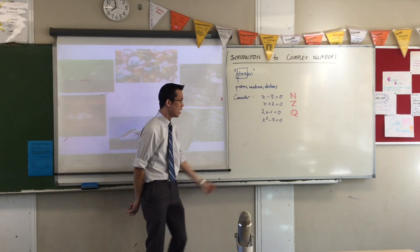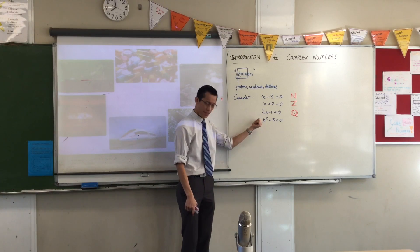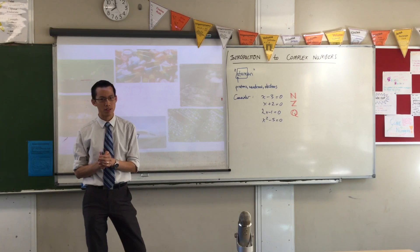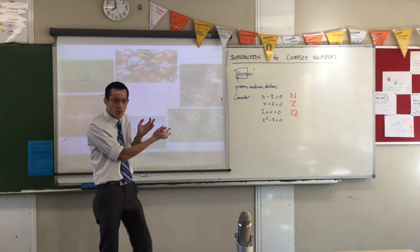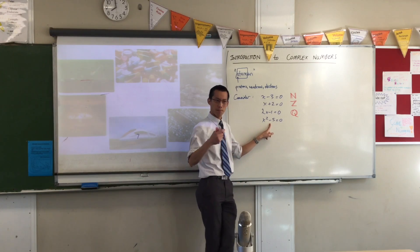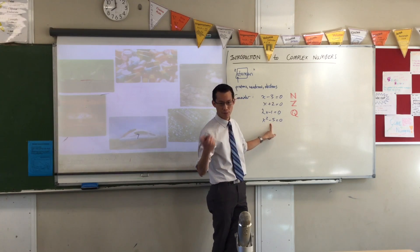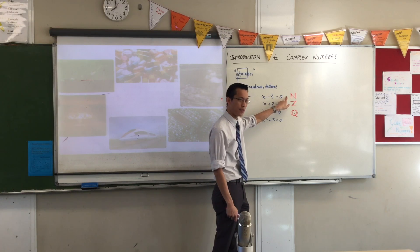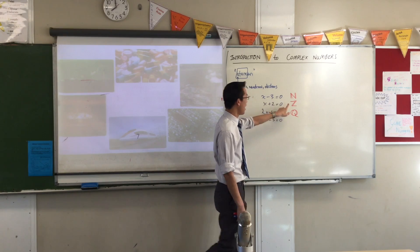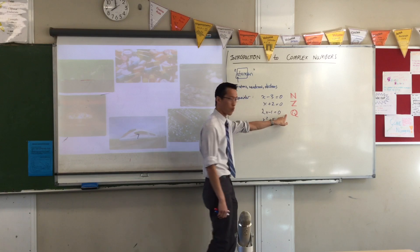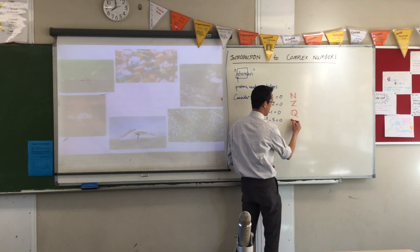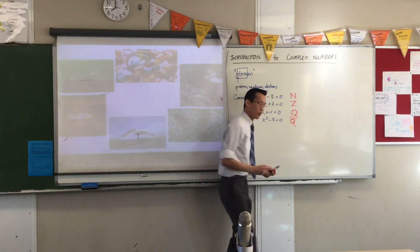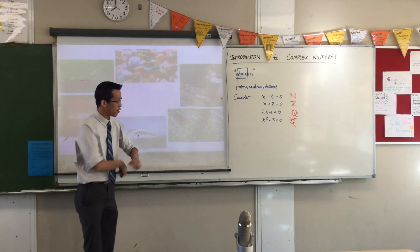Then we get to this guy. This equation is even more special because it doesn't just have one solution, it's got two. But both of the solutions break the patterns we've already set up. The solutions to this are plus and minus, positive and negative root 5. Well, root 5 is definitely not a natural number. It's not like one, two, three, four, five, six, seven, root five. It's certainly not an integer or rational. It's irrational.